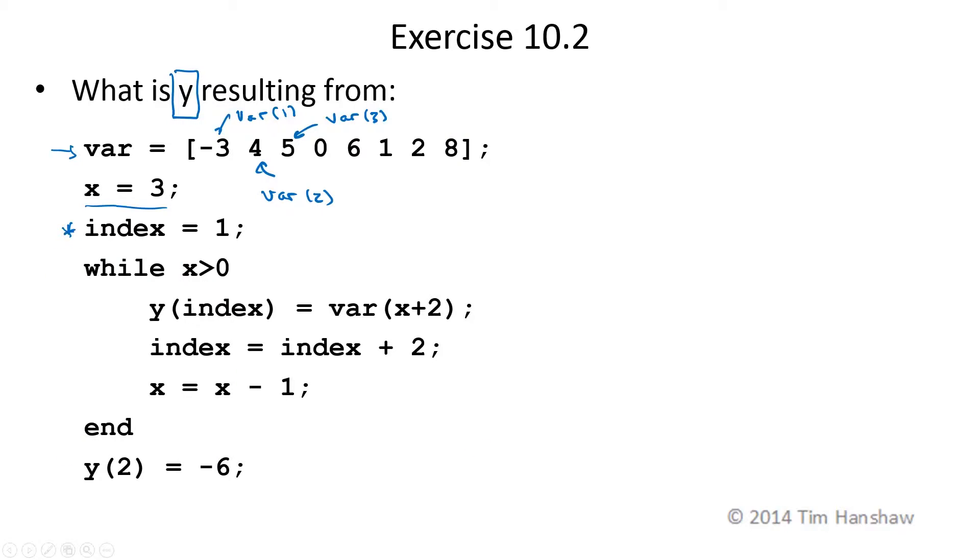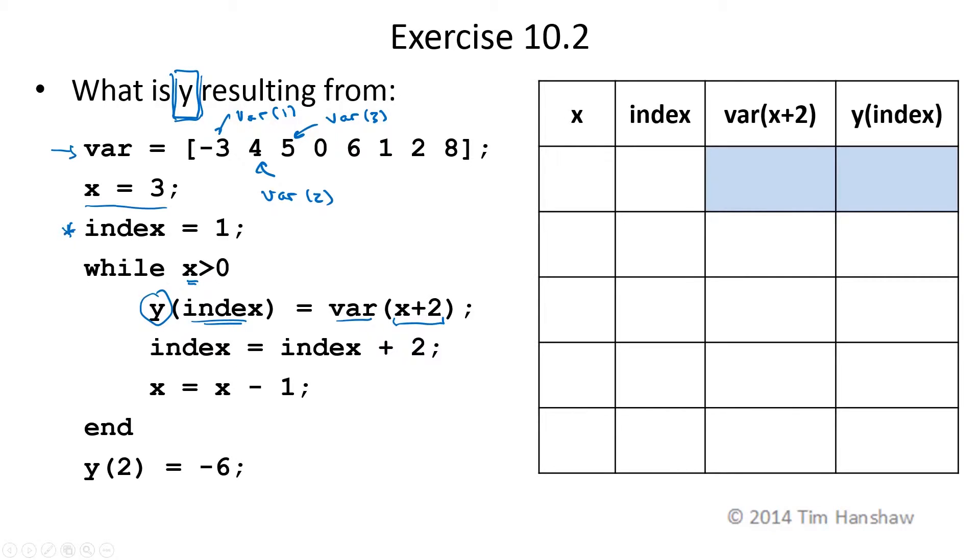As with for loops, let's create a table to keep track of our values. We're going to need to know what X is. We're going to need to know what index is. We're going to need to keep track of X plus 2, var of X plus 2. And of course, we want to keep track of Y because that's what we want to find.